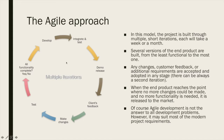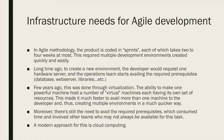In order to achieve such a quick iteration and such a way of software development, the development process must be as quick as possible. Any tasks involved in the development process must be done in the least possible time. That is where the infrastructure needs for agile development arise. Because in agile methodology the product is coded in sprints — each taking two to four weeks at most — this requires multiple development environments created as quickly as possible.